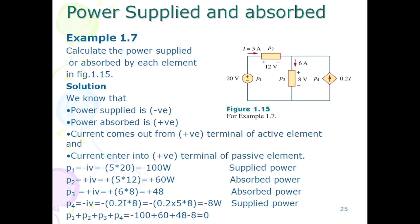So minus vi, where value of i is 0.2i multiply by its voltage. P4 is parallel to p3, so both have same voltage which is 8 volt. Now we have substitute the value of i and the answer is minus 8 watt.